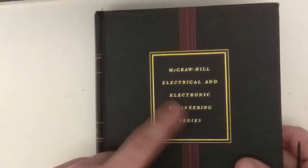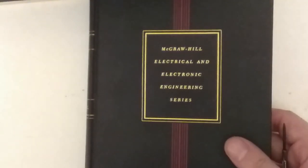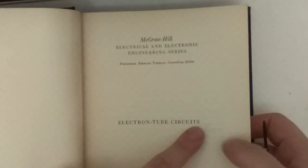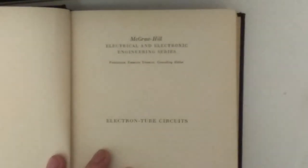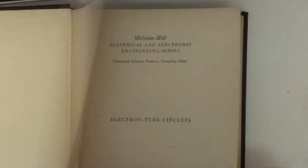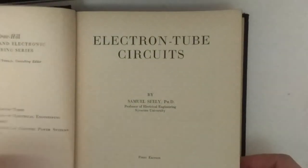So yeah, this is what the supply looks like. Now we can now also look at the circuit for a little while. The circuit is in this book, Electrical and Electronic Engineering series, and the title is Electron Tube Circuits.